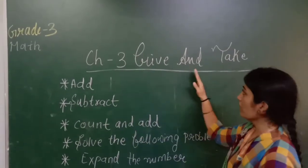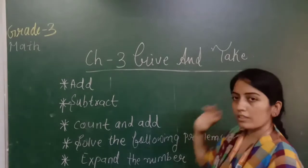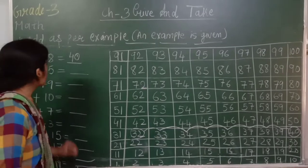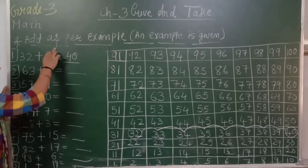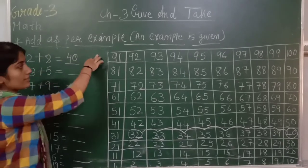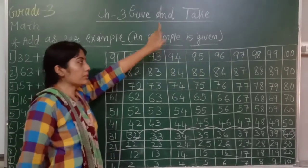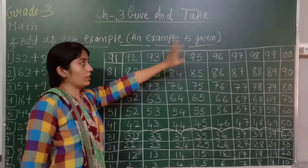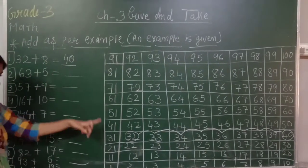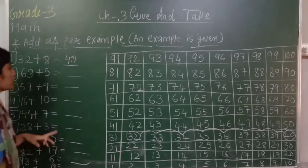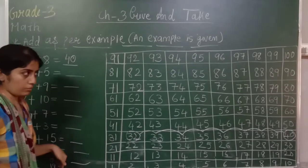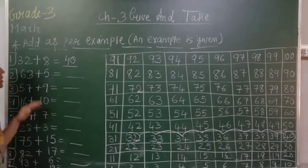Chapter number 3, give and take. Now, add as per example. An example is given. In this exercise, the first example is given, and on that basis we have to solve all sums.